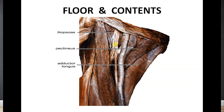Just over the iliopsoas you find the lateral-most content of the femoral triangle, which is the femoral nerve with its branches. In between the iliopsoas and pectineus you will find the femoral artery, which is the middle content of the femoral triangle. The medial-most content is the femoral vein with its tributaries. So laterally it is the femoral nerve, centrally the femoral artery, and medially the femoral vein.